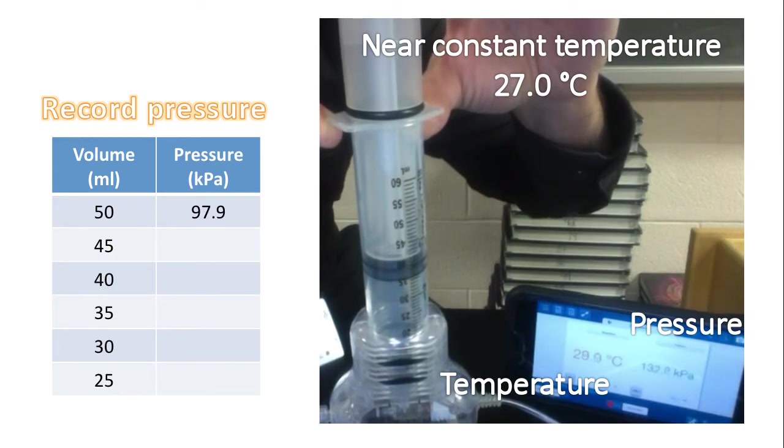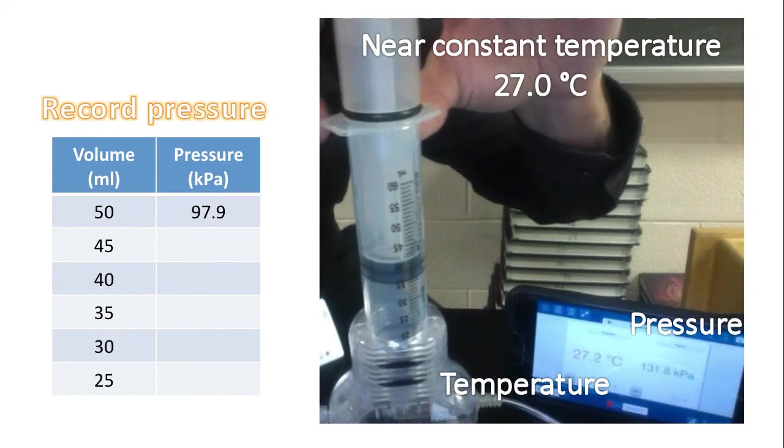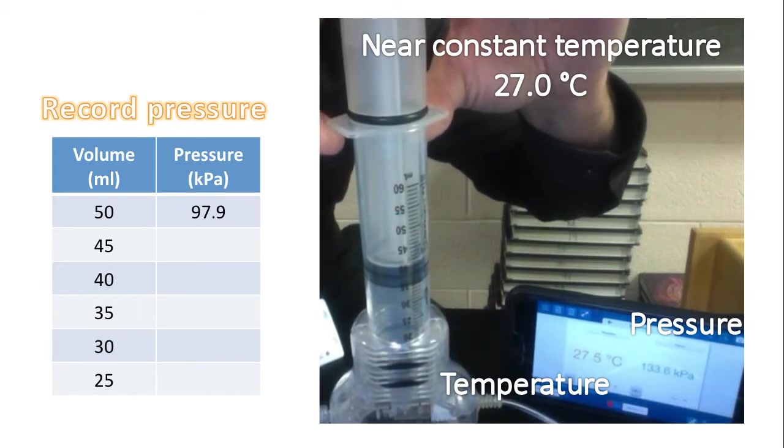Now we're going to go down to 35 milliliters. It's very important to wait. It's very important for that temperature to get back to 27 degrees Celsius. Once it hits close to that, we'll record that pressure.